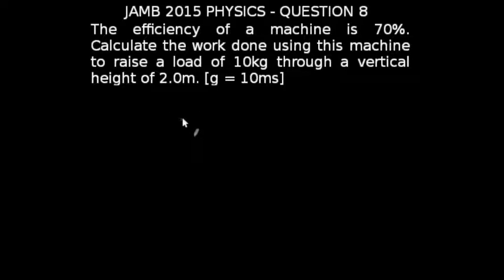We are looking at question 8 of the JAM 2015 physics exams. The efficiency of a machine is 70 percent. Calculate the work done using this machine to raise a load of 10 kg through a vertical height of 2.0 meters. g is equal to 10 meters per second squared.